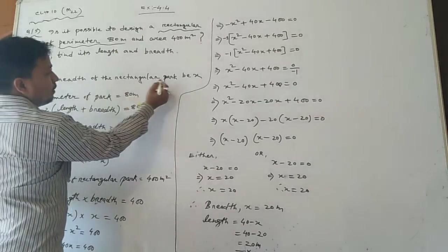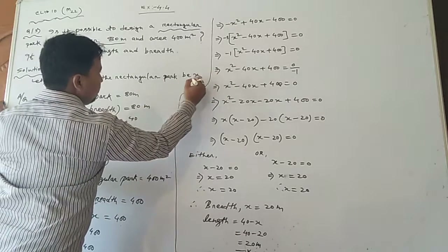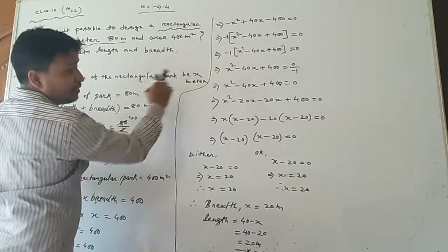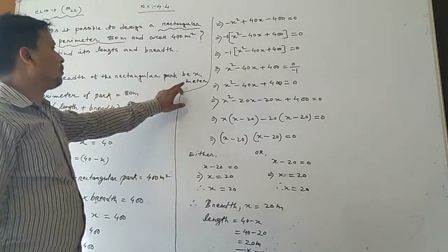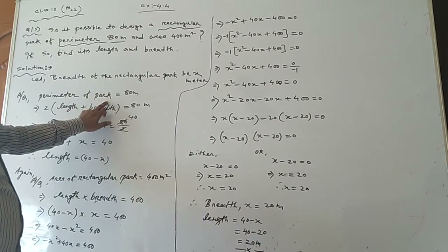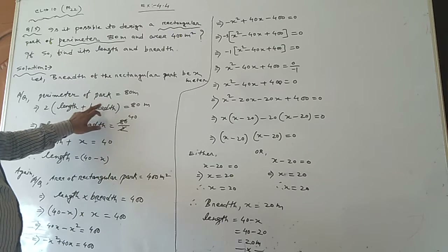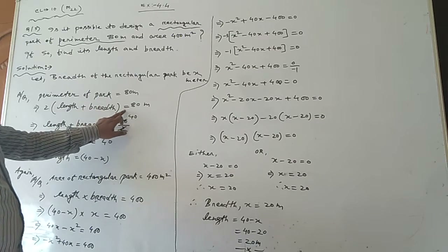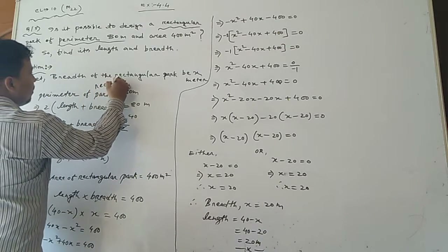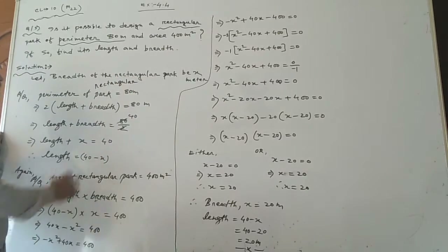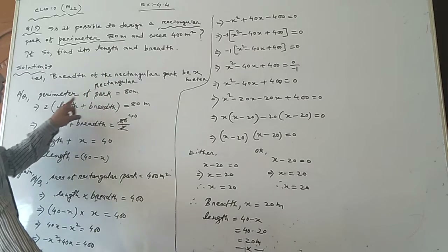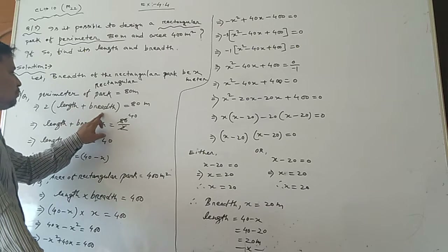We are declaring breadth of the rectangular part as x meters. Breadth of the rectangular part is x meter. Perimeter of the rectangular part is given as 80 meters. So, 2 into (length plus breadth) equal to 80 meter. Perimeter of rectangle equals 2 into (length plus breadth) equals 80 meter.